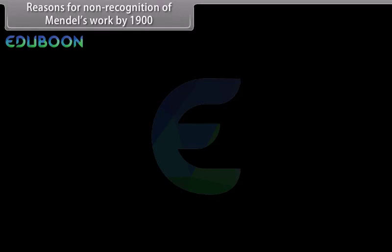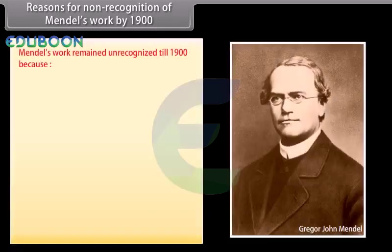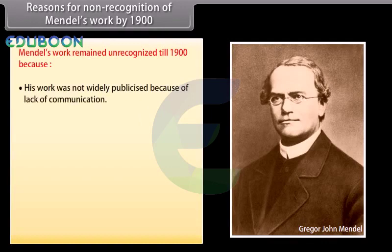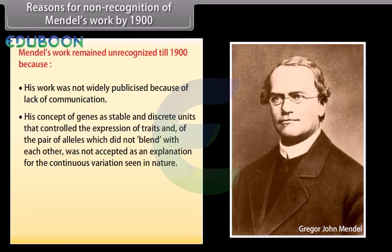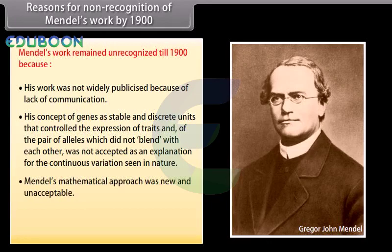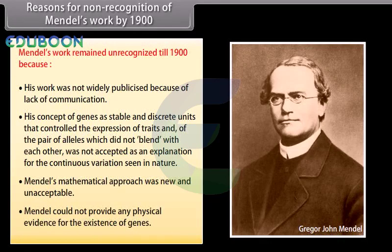Mendel's work remained unrecognized till 1900 because his work was not widely publicized due to lack of communication. His concept of genes as stable and discrete units that controlled the expression of traits, and of the pair of alleles which did not blend with each other, was not accepted as an explanation for the continuous variation seen in nature. Mendel's mathematical approach was new and unacceptable, and he could not provide any physical evidence for the existence of genes.